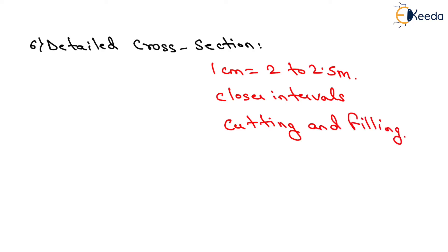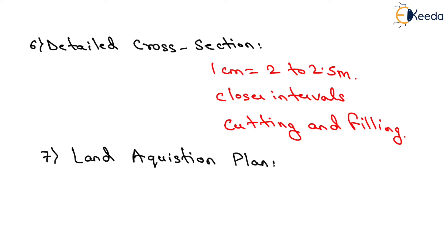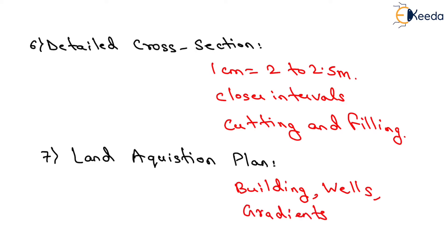The next parameter is Land Acquisition Plan. Land Acquisition Plan and Schedules are usually prepared from the survey drawings for land acquisition details. This plan shows all general details such as buildings, wells, nature of gradients, and other details required for assessing the value. The scale adopted may be 1 cm equals to 40 meter or less.